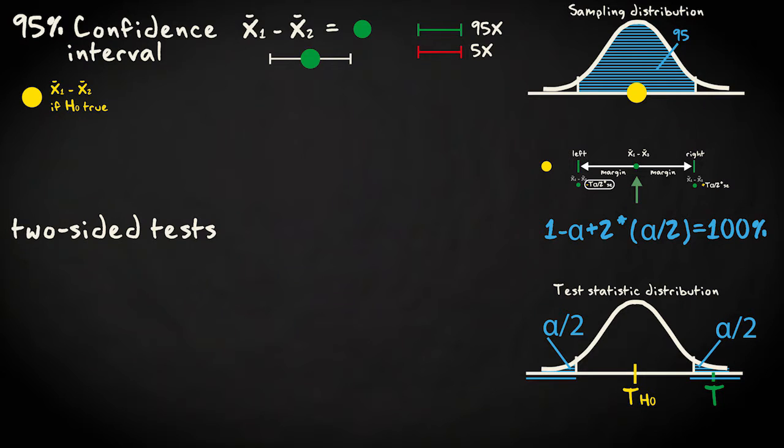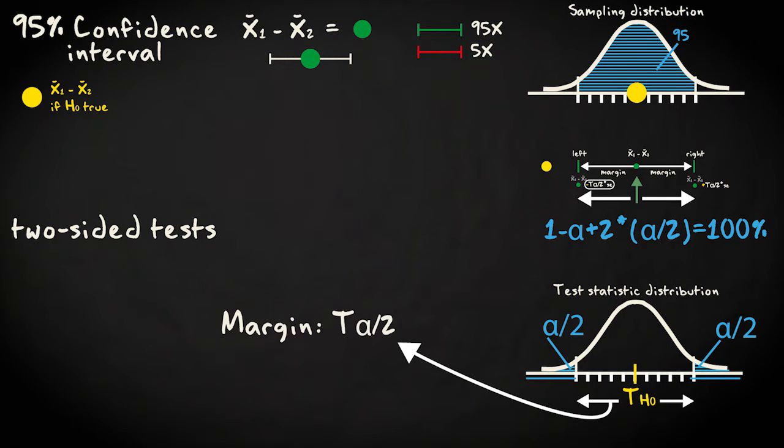The margins around these centers are the same for two-sided tests and confidence intervals. They're just expressed in different units. For tests, the margin equals the critical test statistic value, T, associated with the alpha divided by two, and it's expressed in standard errors.